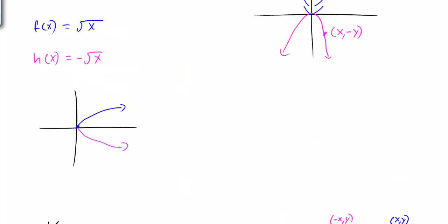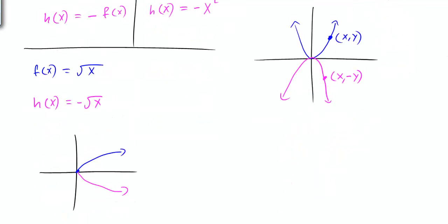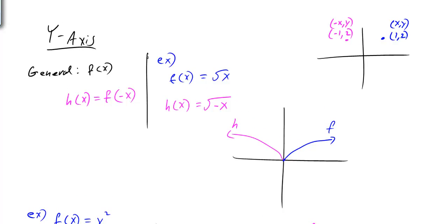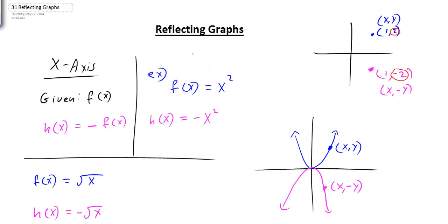To review: reflecting a graph in the x-axis means changing your y value — the x stays the same, the sign of y changes so the graph moves to the other side of the x-axis. The opposite is true for a reflection in the y-axis: the y value stays the same, and only the x value changes sign. You can experiment with your graphing calculator by changing the signs of different functions to see how the reflections occur.